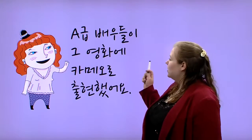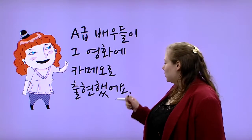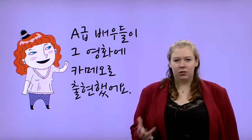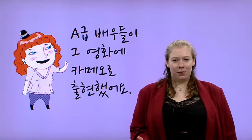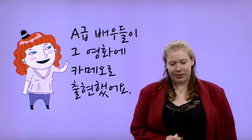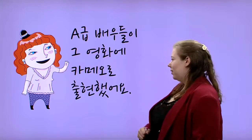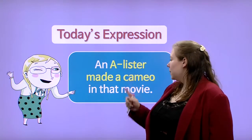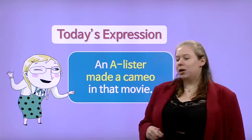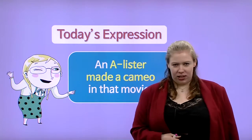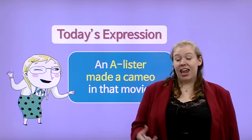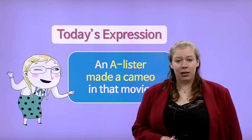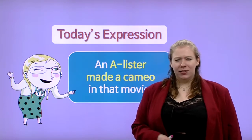일급 배우들이 그 영화의 카메라로 출연했어요. 이거 영어로 어떻게 말해요? Well, let me help you. An A-lister made a cameo in that movie. An A-lister made a cameo in that movie.